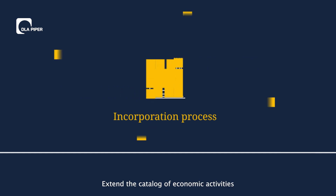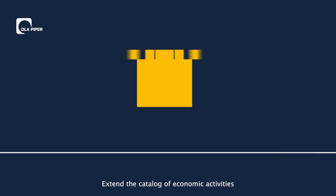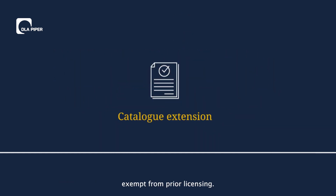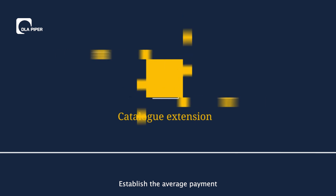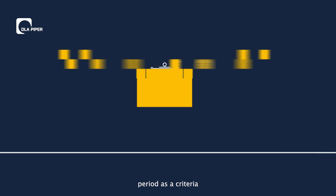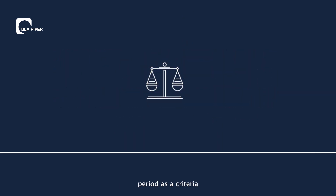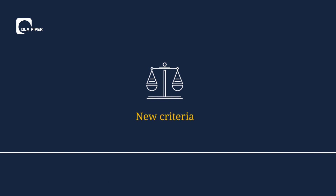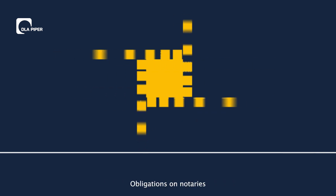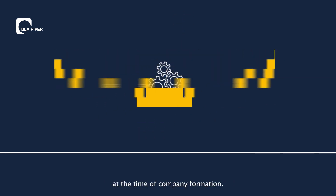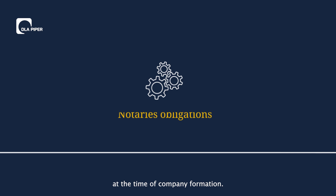Extend the catalog of economic activities exempt from prior licensing. Establish the average payment period as a criteria for grant and public procurement eligibility. Obligations on notaries at the time of company formation.